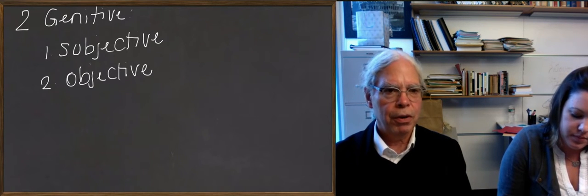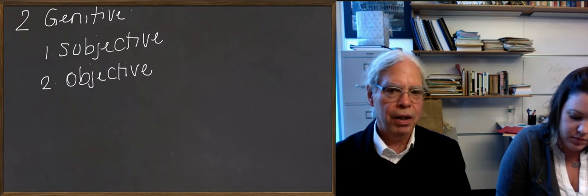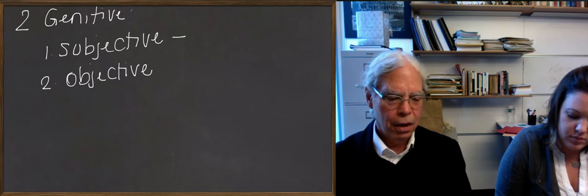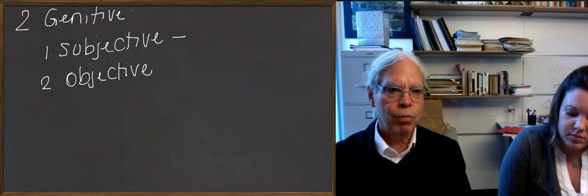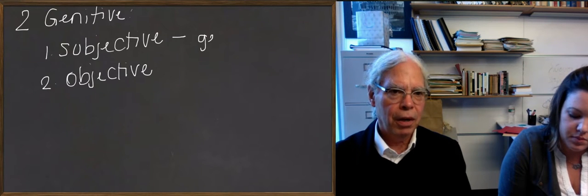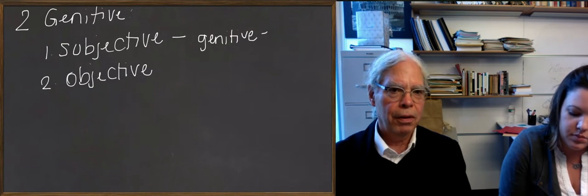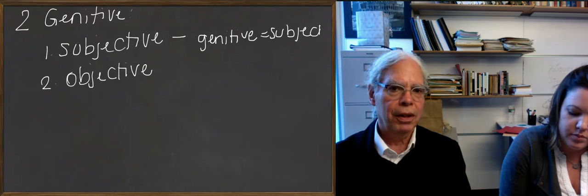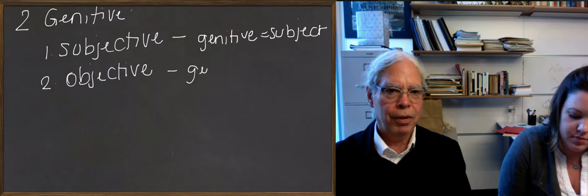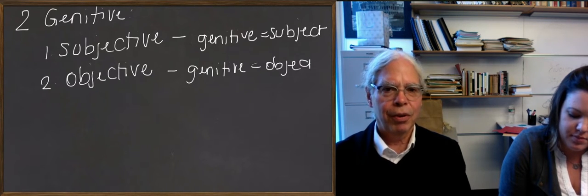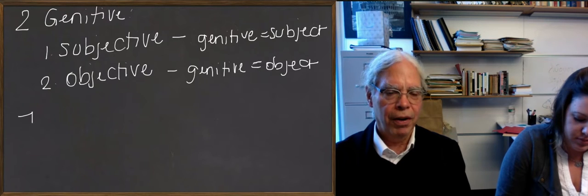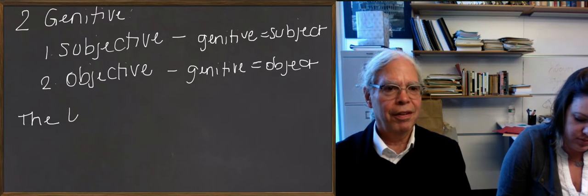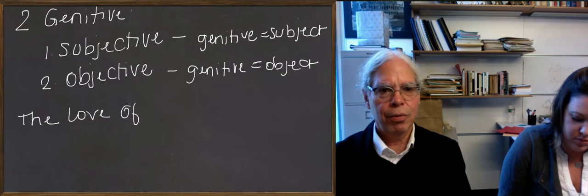The meaning of the terms are that in a subjective genitive what's underlying the genitive is a sentence in which the genitive noun would be the subject, and in the objective genitive the noun in the genitive would be the object. So let's give you an example that may not be helpful in itself. The standard example of this is in English it's ambiguous if you say the love of a father. There are two ways of understanding that.